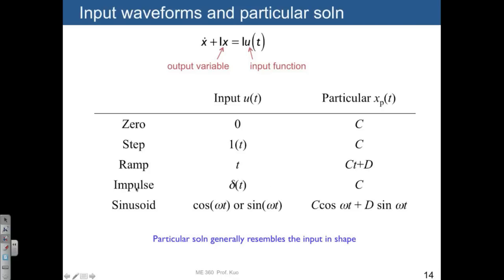For the impulse, for all but time 0, the impulse is actually a zero function. And so it's a lot like our first row here, and it's just going to be equal to a constant.